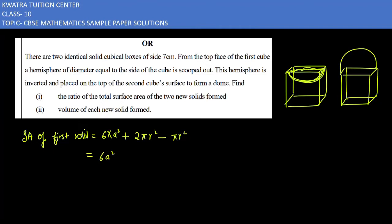If I change this formula, then 2πr² and πr² will minus. So it would be πr². 6 into a². How much is it? 7. Plus π. How much is it? 22 times 7.